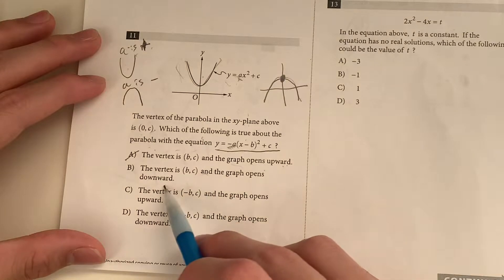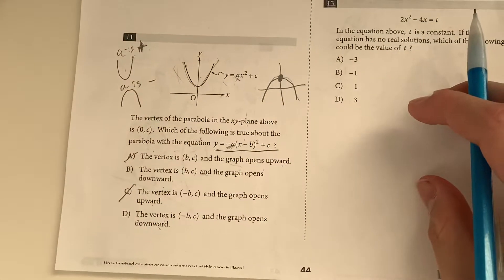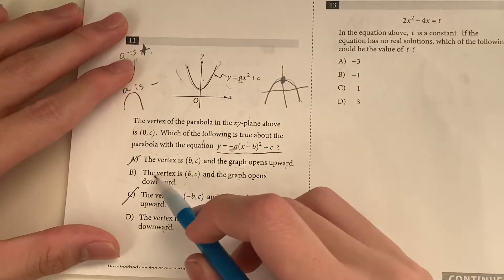So looking at choices, choice A opens upwards. Can't be that. B opens downwards. Good. This says upwards. Nope. So it's either B or D. So what determines whether or not it's B or D?